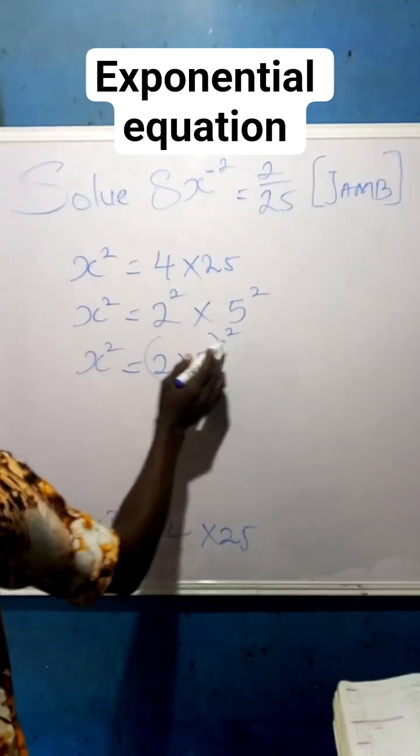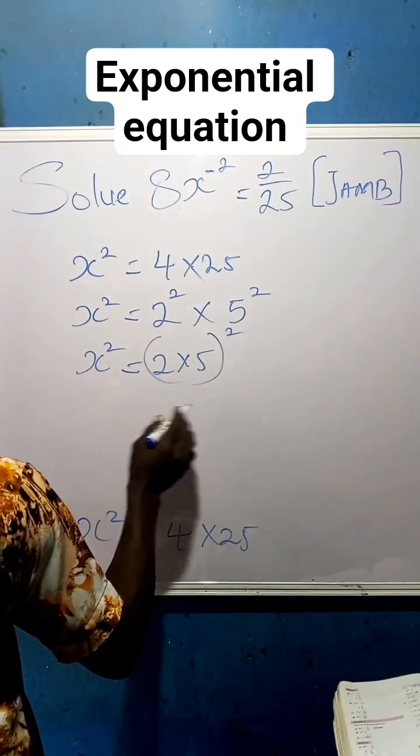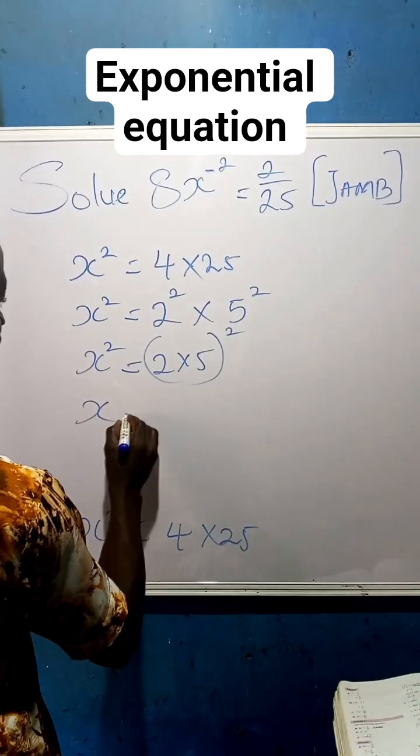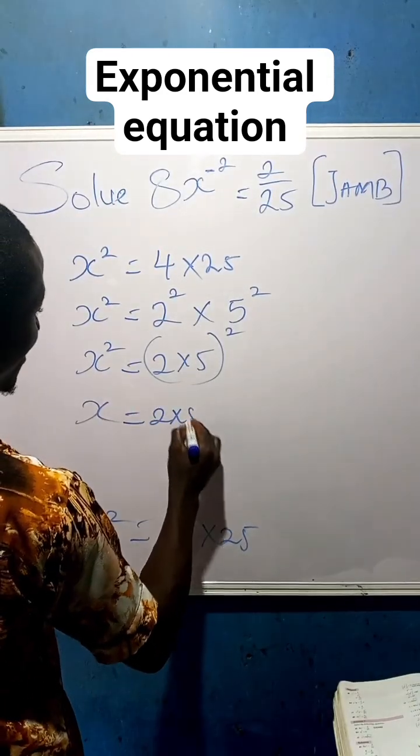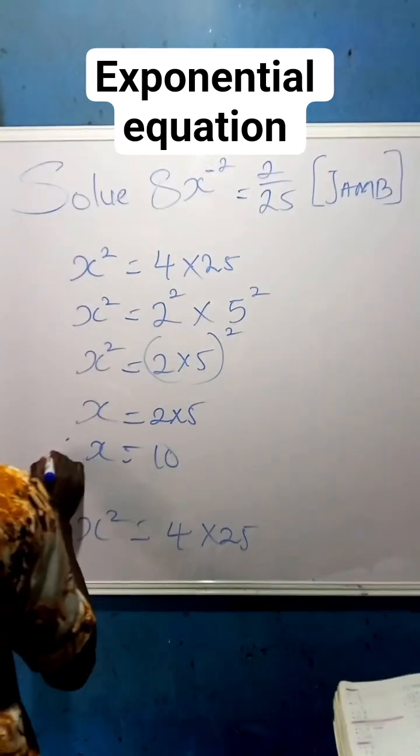Now, we can find out that the power are the same, then we can equally equal the base. So the power is the same, we can equal the base, so that we now have x equals to 2 times 5, so that our x is now equals to 10. This is our final answer.